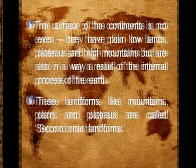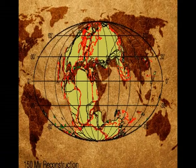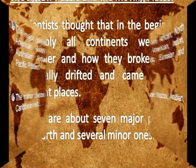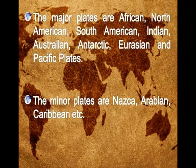Scientists thought that in the beginning all continents were held together and gradually broke up, drifted, and came to their present places. There were about seven major plates on the earth and several minor ones. The major plates are the African, North American, South American, Indian, Australian, Antarctic, Eurasian, and Pacific plates. The minor plates are the Nazca, Arabian, Caribbean, etc.